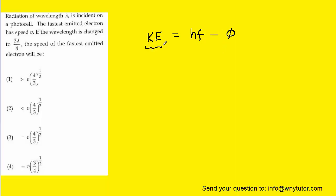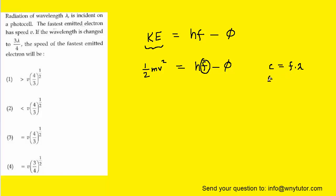It's going to be useful to replace the kinetic energy with the expression 1/2 times the mass times the velocity squared. It's also going to be helpful to make a substitution for frequency. We know that the speed of light is equal to the frequency times the wavelength of the light. Dividing both sides by wavelength gives us that frequency equals the speed of light divided by the wavelength.